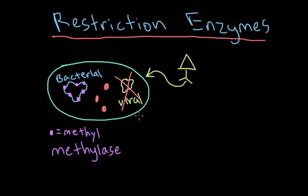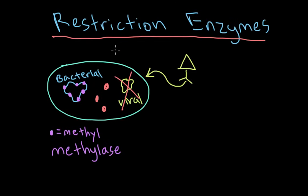This is basically a way for bacteria to protect itself from being infected by viruses. It does so by methylating its own DNA and destroying any foreign DNA that is unmethylated. The reason this is called a restriction enzyme is because researchers were noticing that certain bacteria were actually resistant to being infected by viruses — they were basically restricting viral growth. So when they figured out what enzyme was causing that, they called it a restriction enzyme because it restricted the growth of viruses.